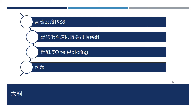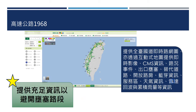今天的大纲包含：高速公路的1968系统、智慧化省道的即时资讯服务网、新加坡的One Motoring，以及最后提供一个练习题目。首先来看1968的部分。相信大家都有在高速公路上塞车的经验，感受非常非常糟糕，好像变成一个大型停车场跑都跑不掉。